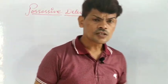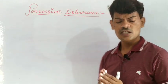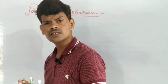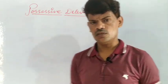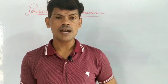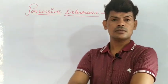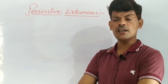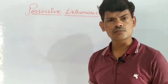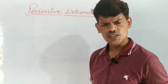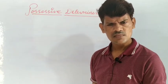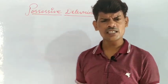Possessive determiner shows possession, relation, attachment, and ownership. Examples: my school, my college, my home, my classroom, my pen, my chair, my television, your teacher, your television, their country, our country — all are possessive determiners.